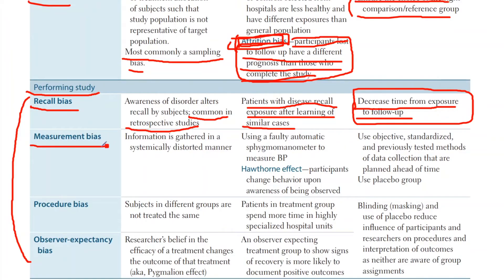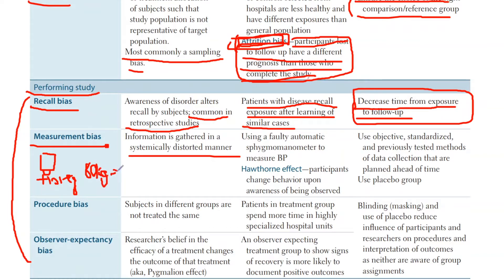The next one is measurement bias — when you're systematically gathering information in a distorted manner. An example is a weighing machine that someone has altered so it reads 10 kilograms higher than the true weight. If someone is actually 80 kg, the machine shows 90 — that's clearly not valid. Measurement bias is when you're gathering information in a systematically distorted manner.